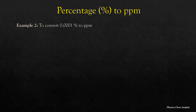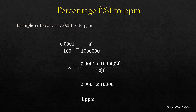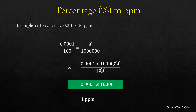Let us see with another example: to convert 0.001 percentage to PPM. So 0.001 divided by 100 equals X divided by 1 million. X equals 0.001 into 1 million divided by 100. By calculating, we get 0.001 into 10,000, that is equal to 1 PPM. So again, 0.001 percentage multiplied by 10,000 gives 1 PPM. This is the shortcut way to convert any percentage to PPM — just multiply that percentage by 10,000 and you will get the answer.